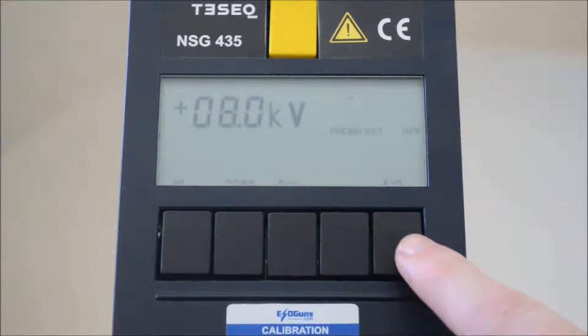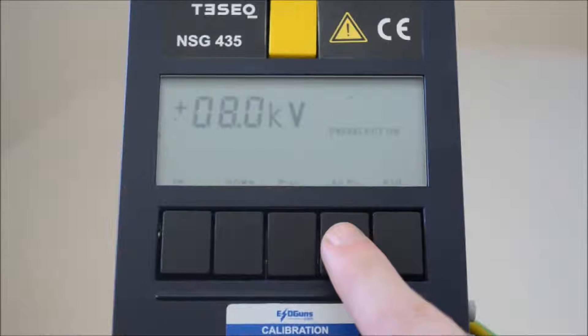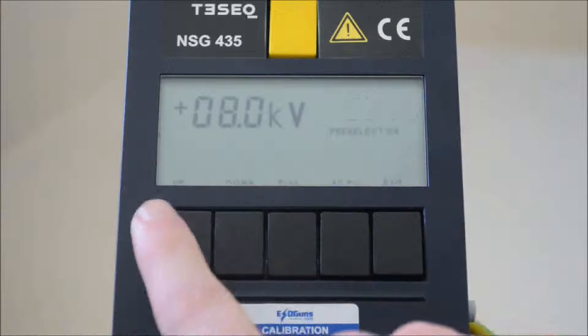Press F5 again to access the preset counter. Followed by F3 to turn it on. F4 can be used to alternate polarity halfway through your test sequence. Using F1 will raise our count to 30 pulses.